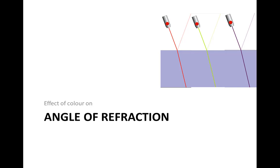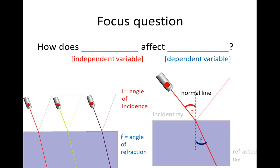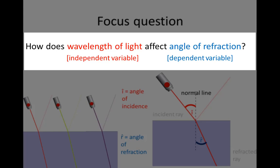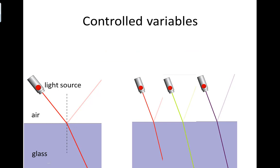We're going to investigate this in two different ways. First, we're going to look at the effect of colour on angle of refraction, and later, we're going to look at the effect of colour on extent of refraction, because these two things don't mean the same thing. Let's start with the effect of colour on angle of refraction. So we're going to change the colour of light that we use — so what is our independent variable? Remember, we're going to use the quantitative form, so you shouldn't write colour. And what are we going to measure? Fill in these gaps.